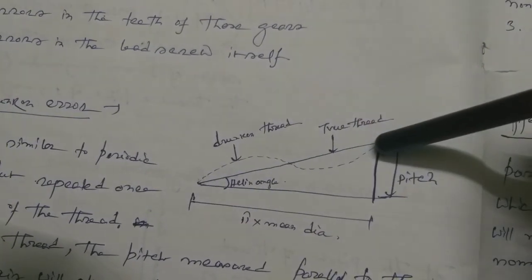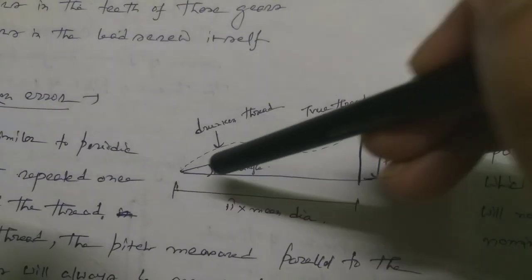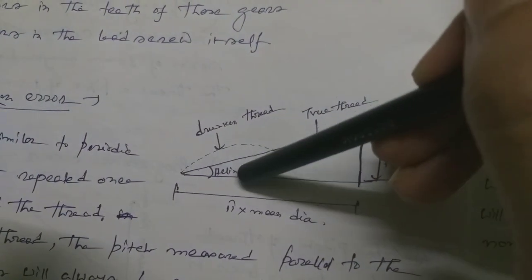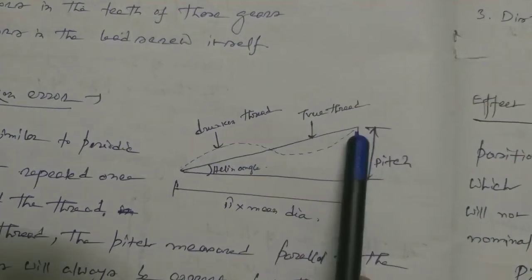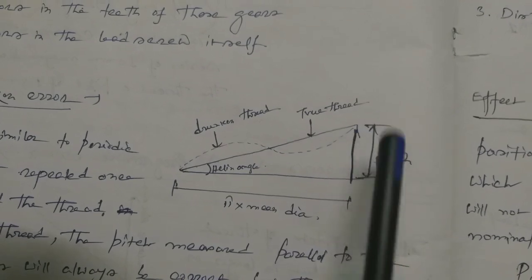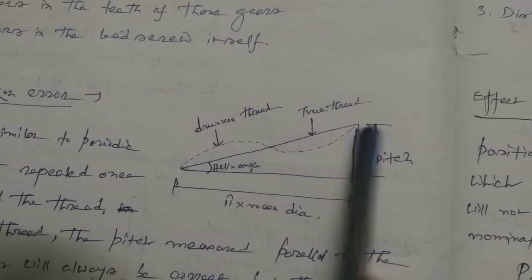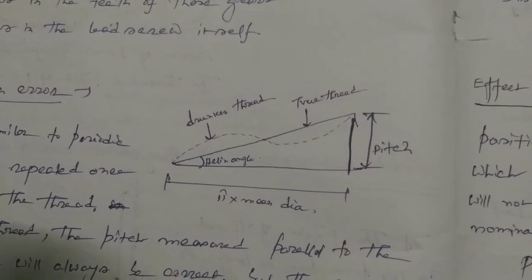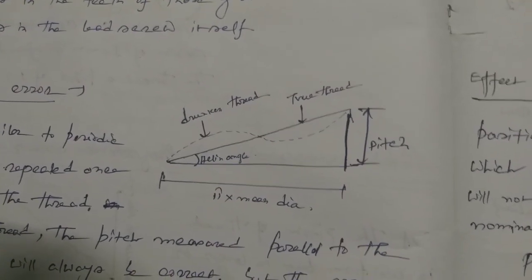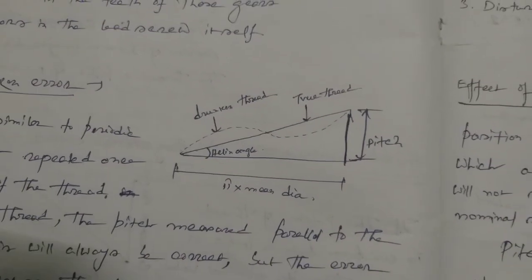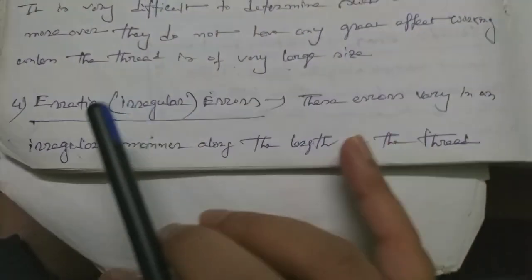In a drunken thread, it is not a uniform helix. The thread does not follow the standard helix angle — it deviates in the middle of the thread path.